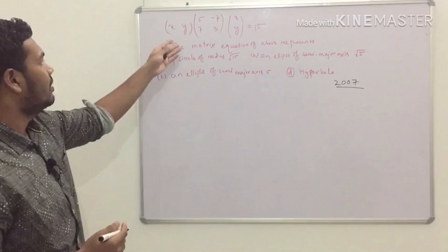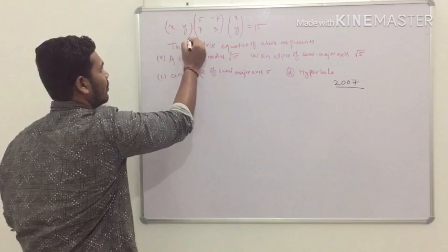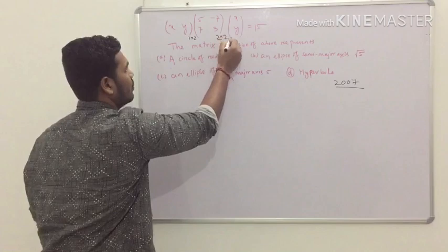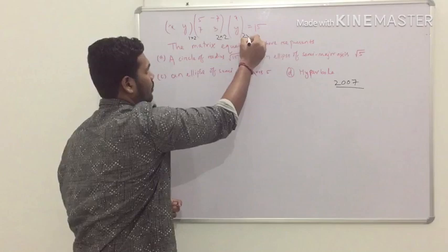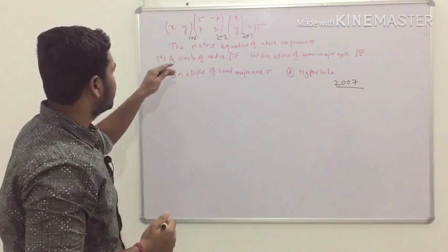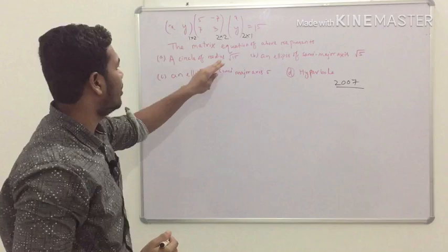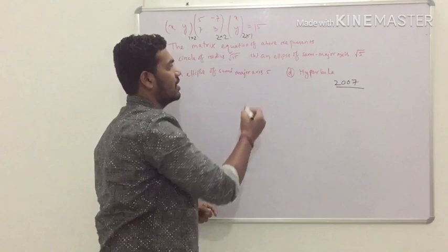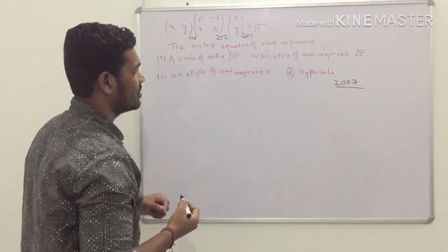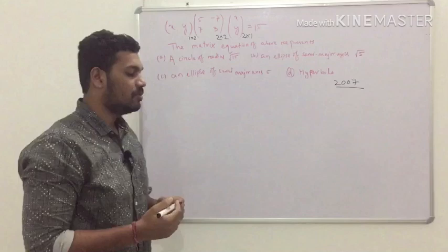Just look at the problem. A product of three matrices is given. The first matrix is of order 1×2 (two columns, single row), the second matrix is of order 2×2, and the third matrix is of order 2×1 (two rows, single column). The question asks what conic section the matrix equation represents. Option A: a circle of radius √15. Option B: an ellipse of semi-major axis √5. Option C: an ellipse of semi-major axis 5. Option D: a hyperbola.